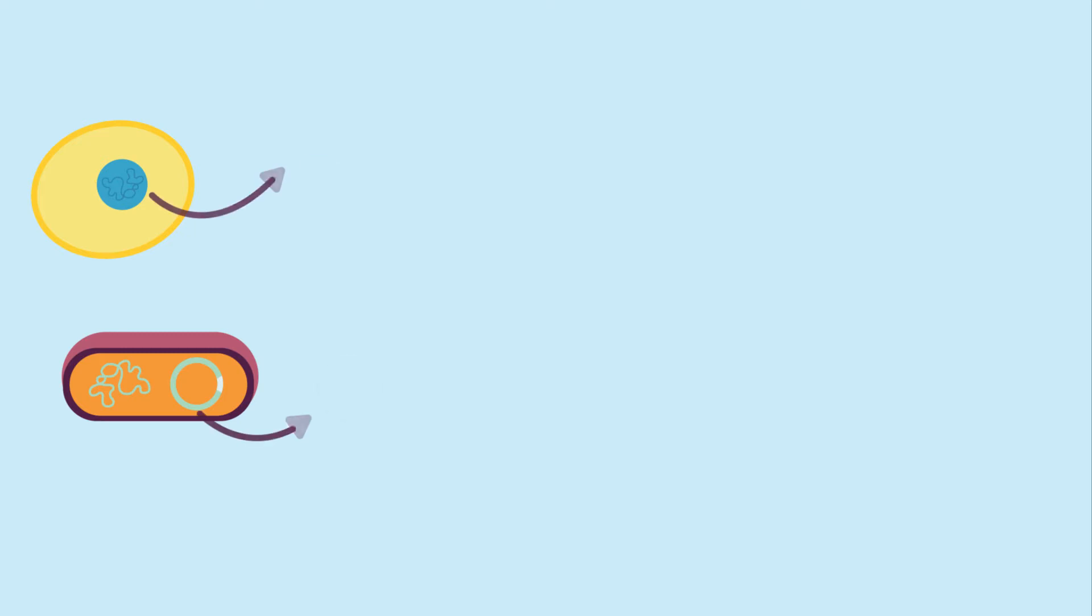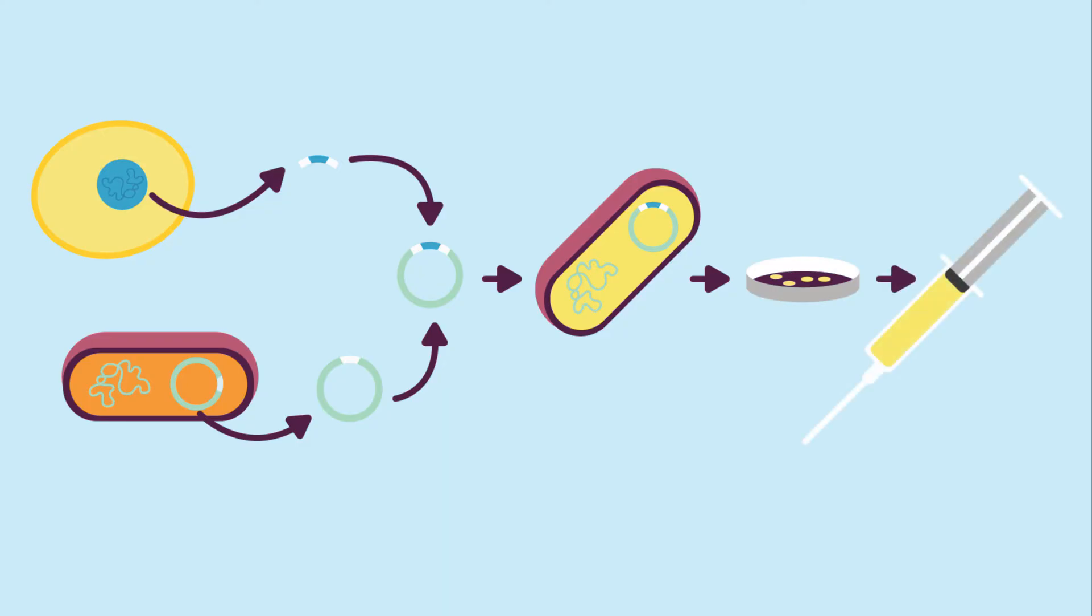You may know how human genes are transferred to host bacterial cells, which then produce large amounts of substances humans require, such as hormones like insulin. This is a form of gene technology called genetic engineering.